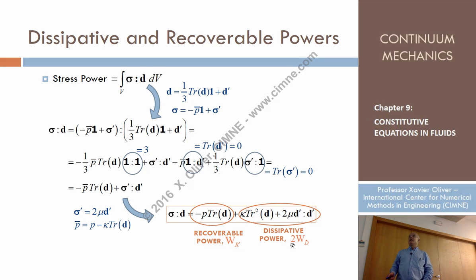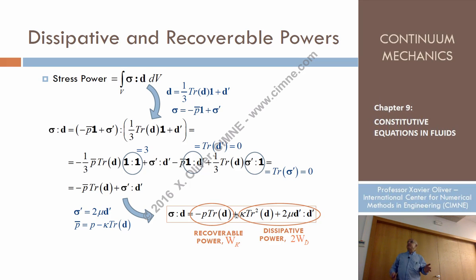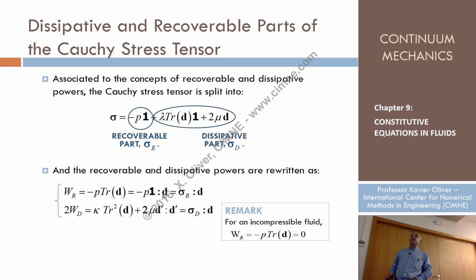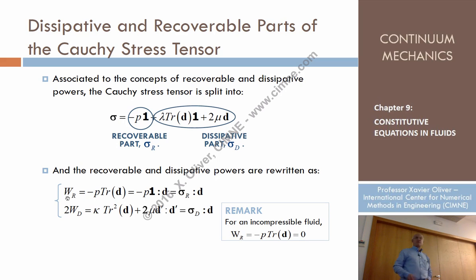Finally, the stress power can be split into the recoverable part with that expression and the dissipative part with that expression. The recoverable part is just the product of P times the trace of D — you multiply P times the identity and take the trace of D. This hydrostatic stress state, when multiplied by D, produces what we call the recoverable part of the stress power.